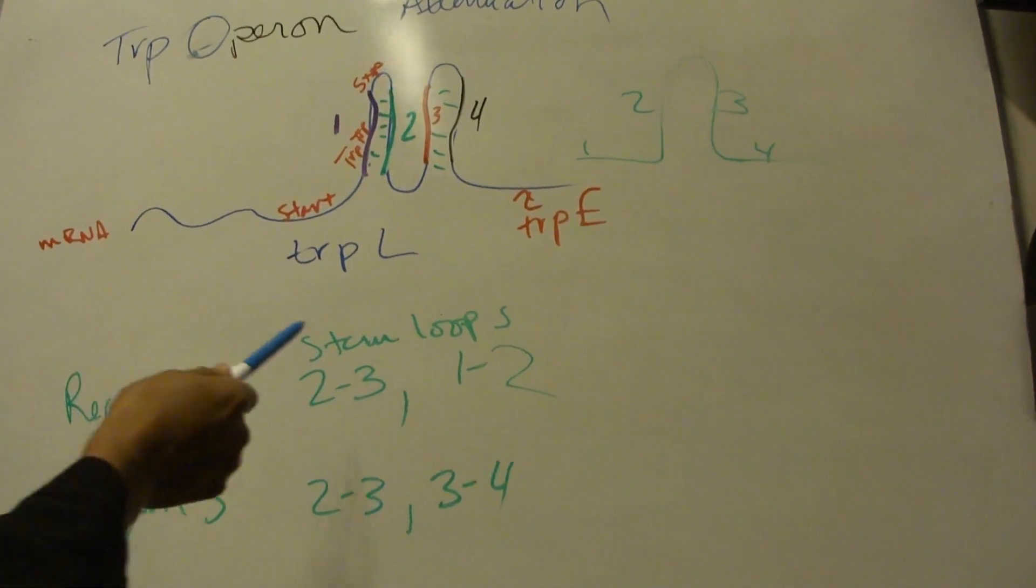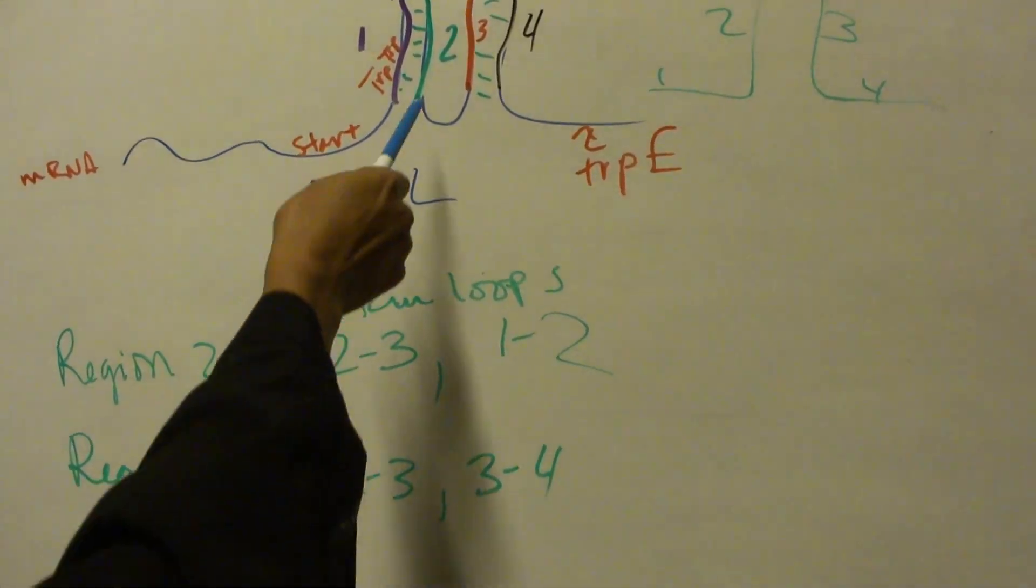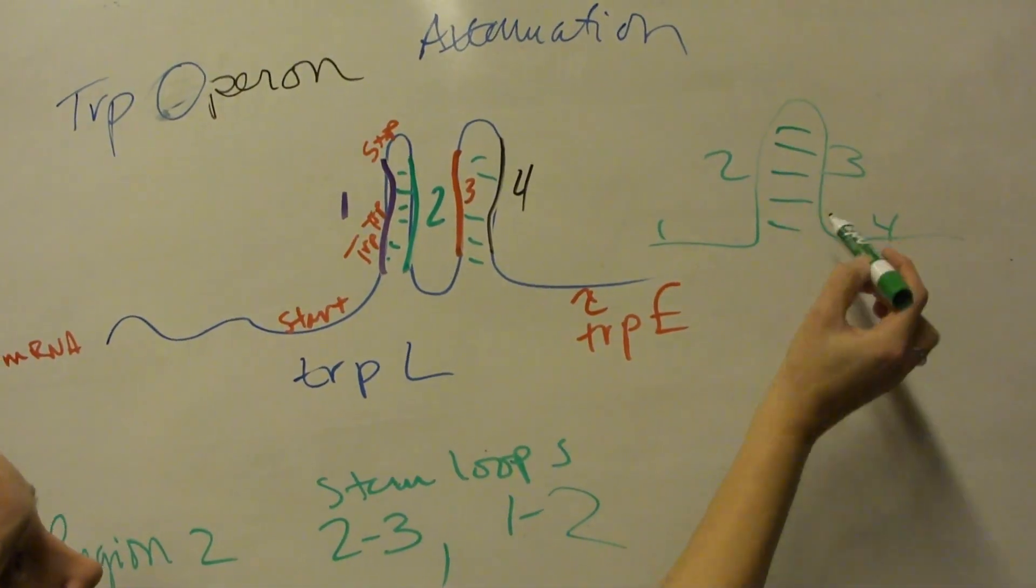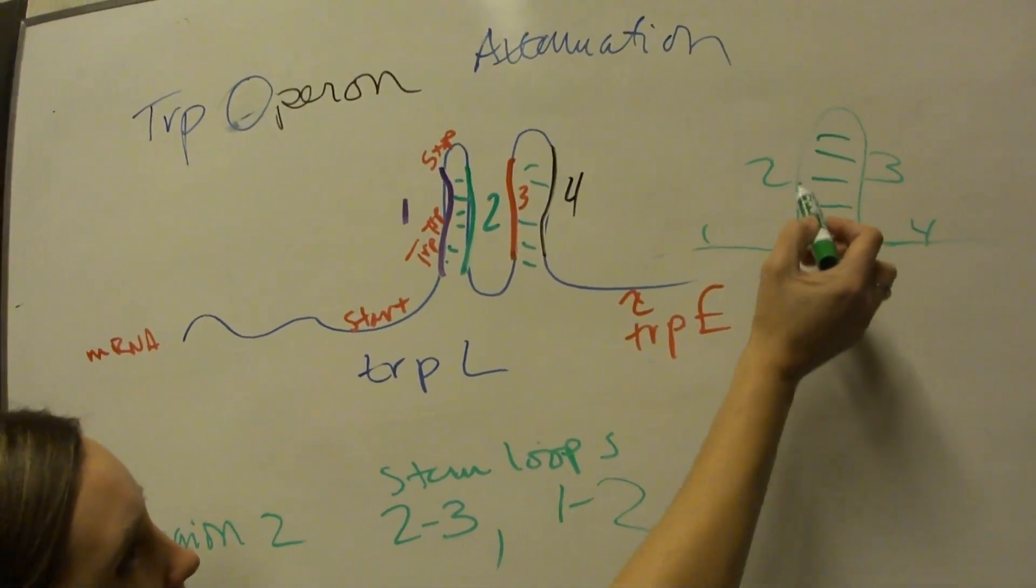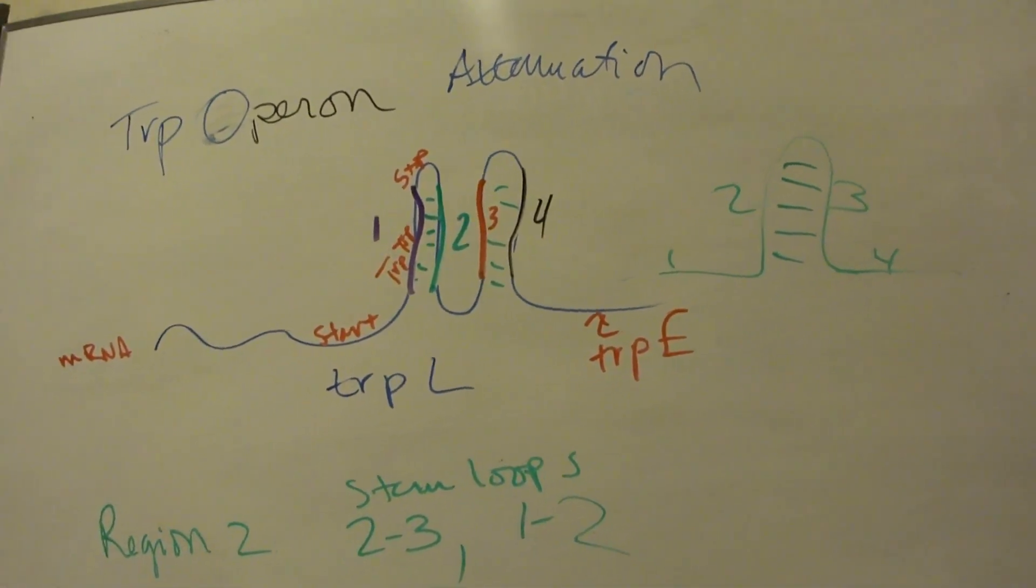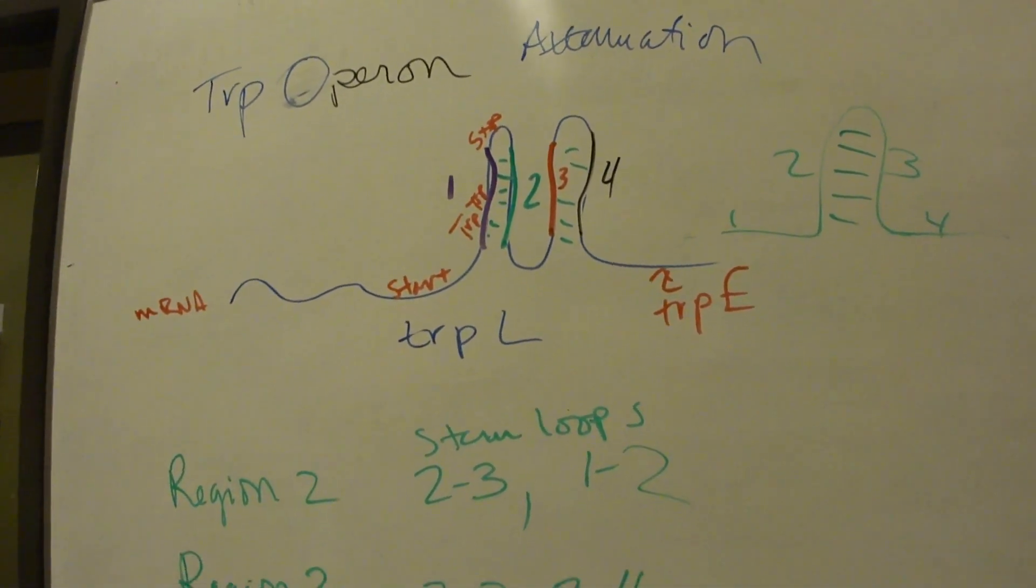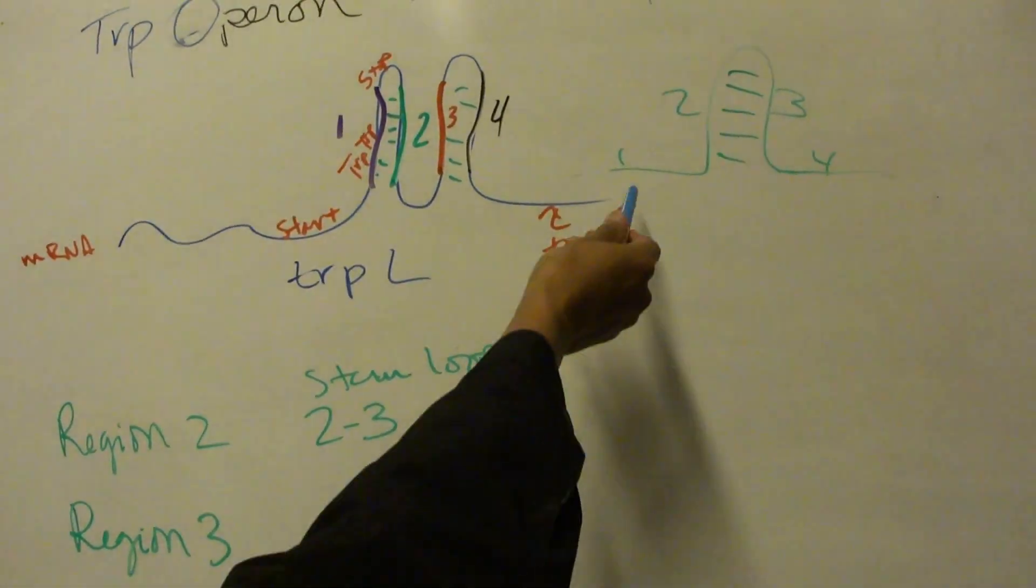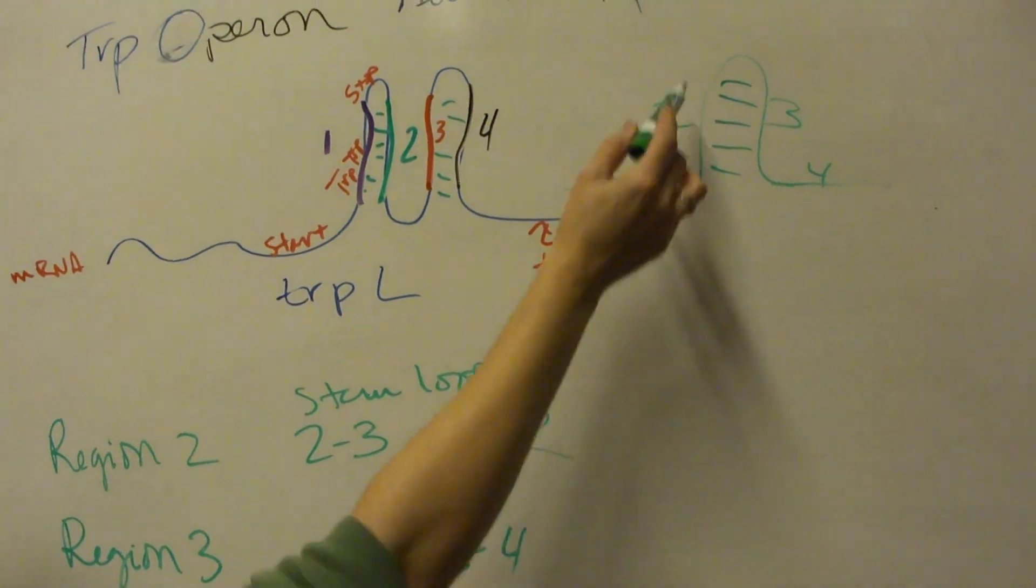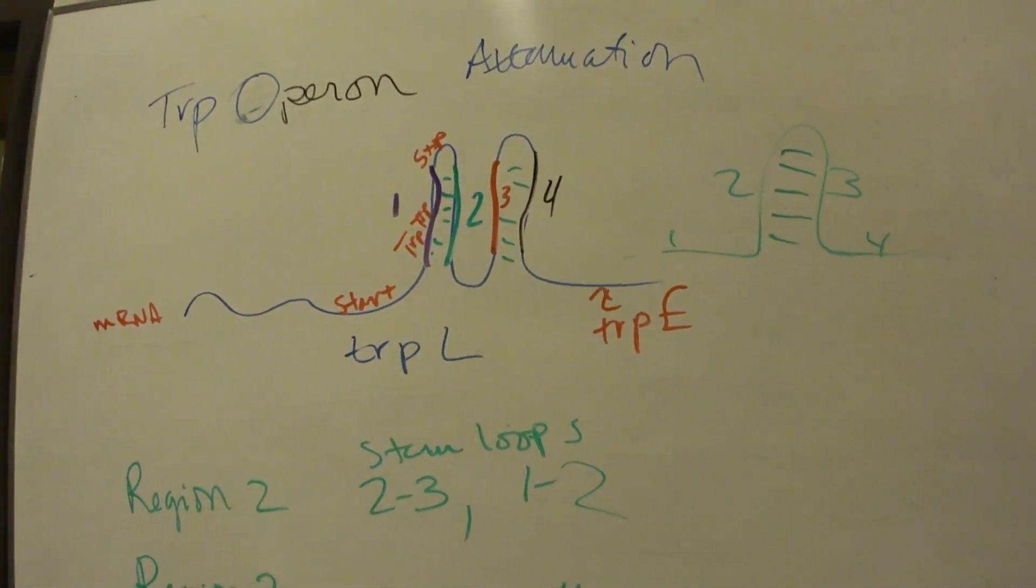So they can either form stem loops 2-3 or 1-2. When you say the stem loops between 2 and 3, is this one right here? Yes, in that case it would look like this: you'd have region 1 and then region 2 and 3 forming a stem loop and then region 4 flattening out.